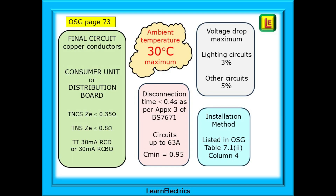We are concentrating just on Part 7.1 in this video, and even the first page of Part 7 takes some understanding, so here is an easy breakdown of page 73. The page sets out the criteria for using the tables in Part 7. It tells us that we are dealing only with final circuits with copper conductors. All circuits are assumed to start and finish - for ring circuits - at a consumer unit or distribution board. The following earthing systems are referenced: TNCS, TNS,